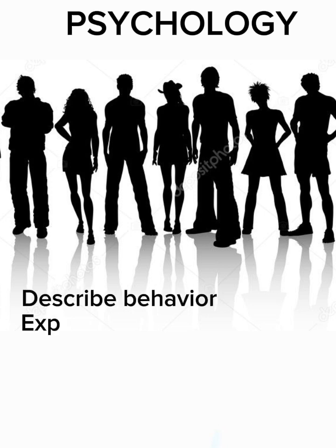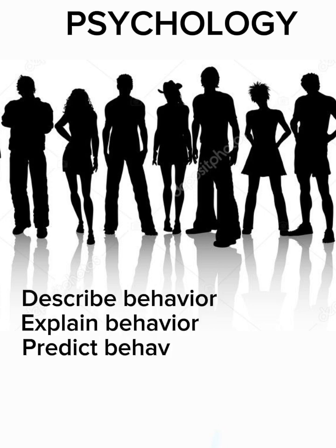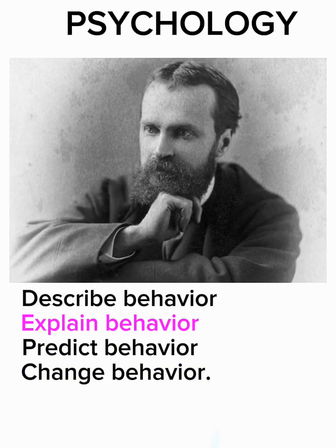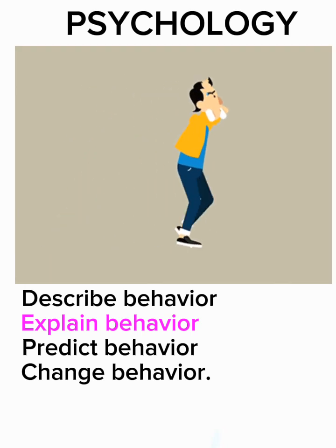Psychology has four main goals: one, to describe behavior; two, to explain behavior; three, to predict behavior; and finally, to change behavior. But before you can predict behavior and before you can change it, it is important that you be able to explain it. Is it possible for psychology to explain why we do the things that we do?